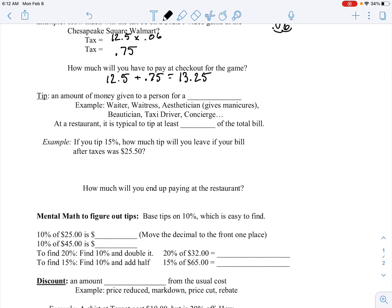A tip is the amount of money given to a person for some type of service, whether you go to a restaurant or get a ride in a taxi or an Uber. When you're at a restaurant, it is normal to tip at least 15% of the total bill. So if we tip 15%, how much tip would we leave behind if our bill was $25.50?